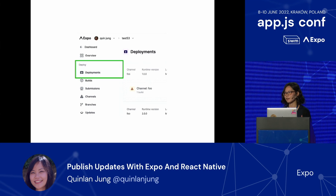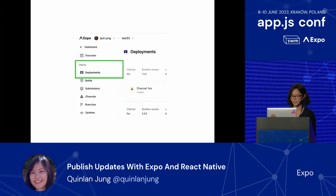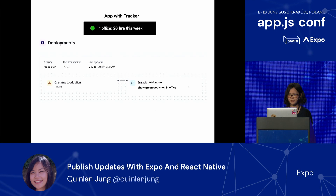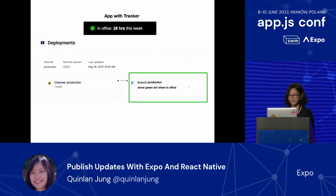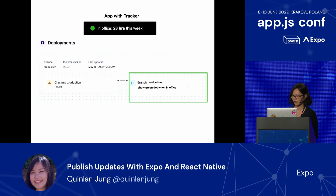Because you can have many different app runtimes, it can be hard to visualize what exact updates they're going to get. So at Expo, we've made a UI called the Deployments UI to help you visualize that. For example, in the app with location tracking, we can see that we've deployed it to production, and we can see that whenever a user with this app version queries for a new update, we're going to show the green dot when the user is in office.